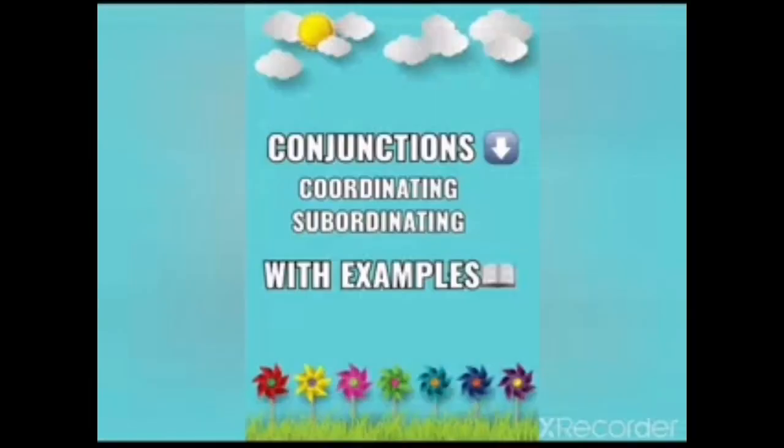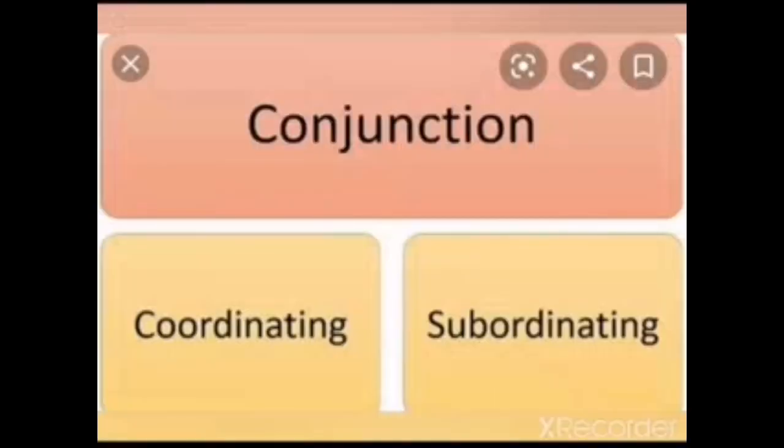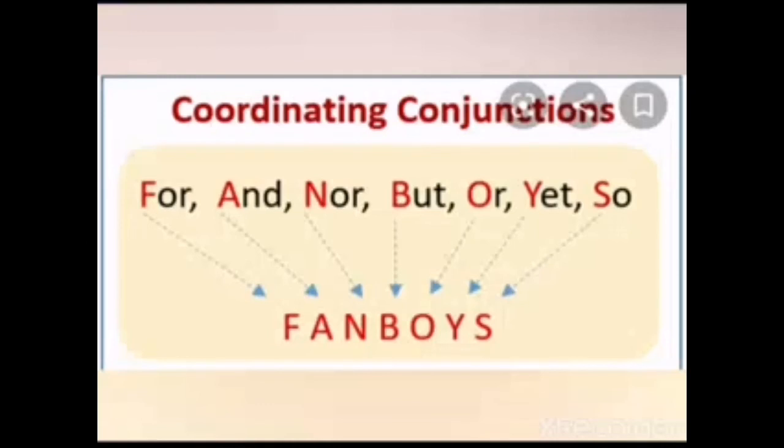Conjunctions. Conjunctions are of two kinds. Conjunctions with examples. Conjunctions are the words which are used to join the phrases or clauses to make them a longer sentence. There are two types of conjunctions: coordinating conjunctions and subordinating conjunctions.